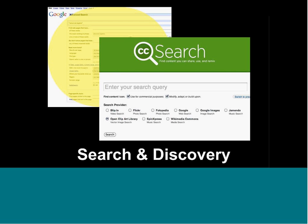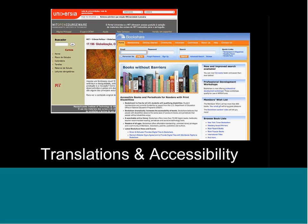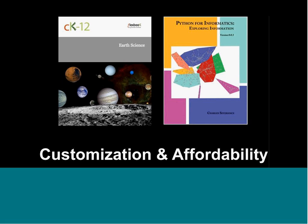There are benefits around search and discovery that you all appreciate as librarians. Not all resources that teachers and faculty use are in the language they need or may be fully accessible. In the United States we have legal accessibility requirements — Section 508. One benefit of a CC license is that if a resource isn't in the language you want or isn't fully accessible, you have the legal rights to modify it.